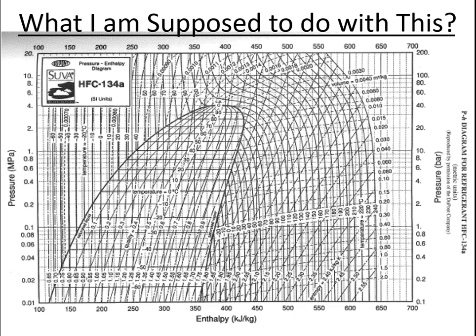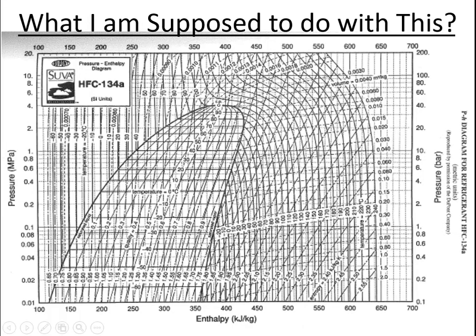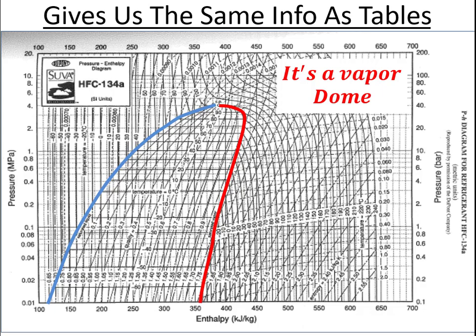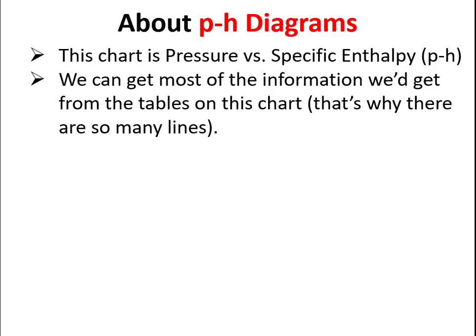This is the type of graph you might see for refrigeration or heat pump problems — a pressure versus enthalpy curve, in this case provided by DuPont and Suva for HFC-134a, a common refrigerant. The graph looks intimidating at first, but we can recognize it as a vapor dome. These vapor compression cycles are Rankine cycles in reverse, showing how we get a two-phase mixture during boiling and condensing. The PH diagram has pressure on the vertical axis and specific enthalpy on the horizontal axis, and it encodes most of the information you'd get from property tables — which is why it has so many different lines for different properties.